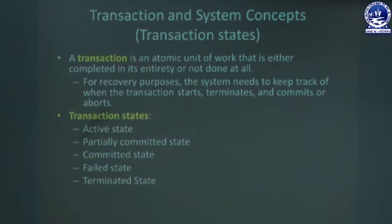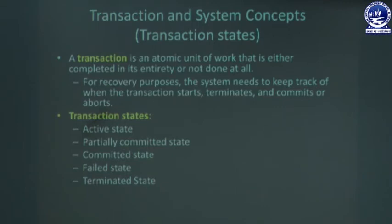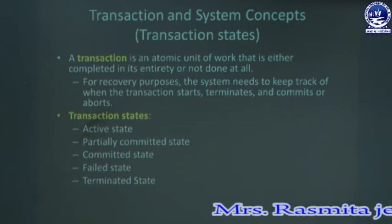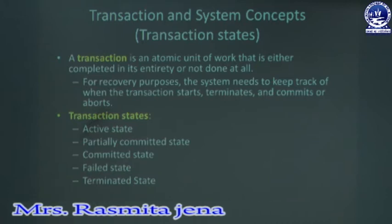Next, we will discuss the transaction and system concept, and the transaction states. A transaction is an atomic unit of work that is either completed in its entirety or not done at all. The different states of a transaction are: active state, partially committed state, committed state, failed state, and terminated state.